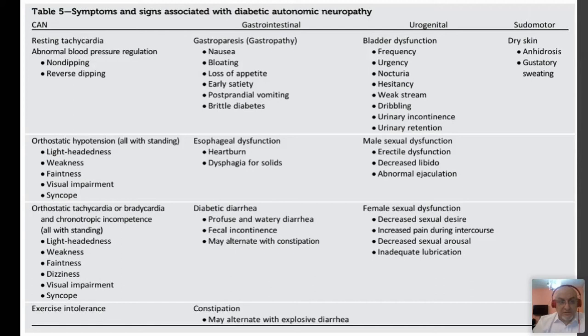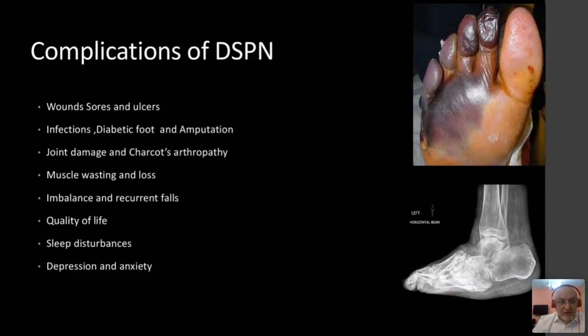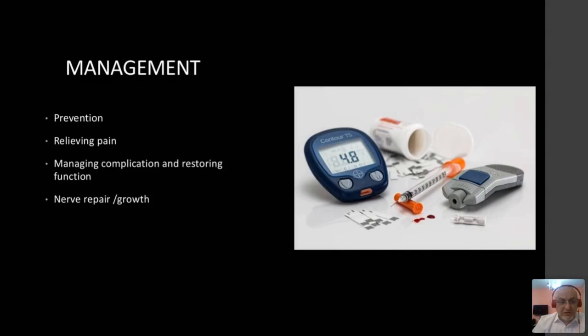The most common complications are wound infection, joint involvement — especially Charcot joint — muscle wasting, reduced quality of life, sleep disturbances, and sometimes depression and anxiety. Treatment and management follows the formula of: prevention, relieving pain, managing complications, and nerve repair or growth.